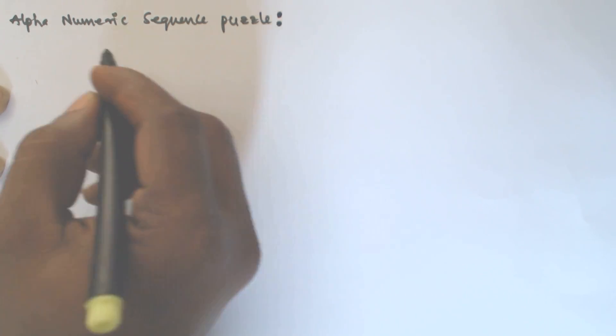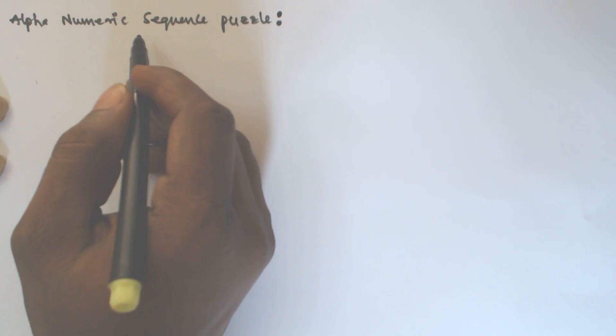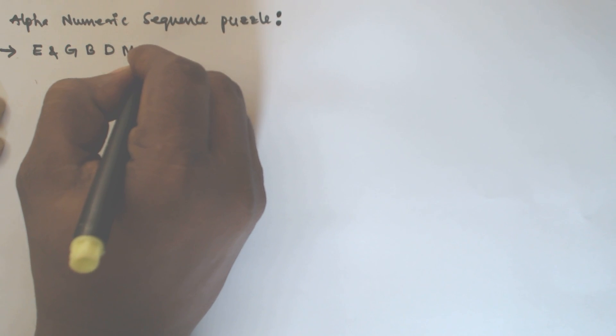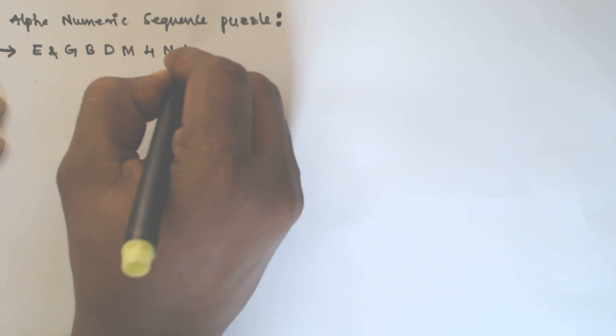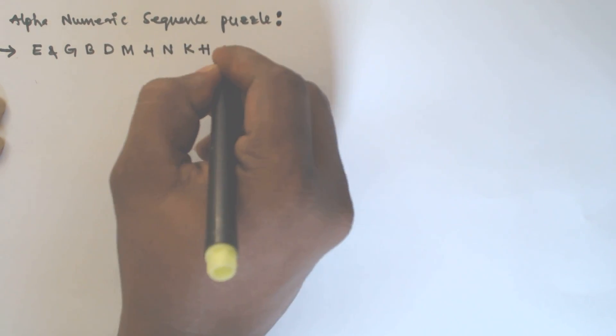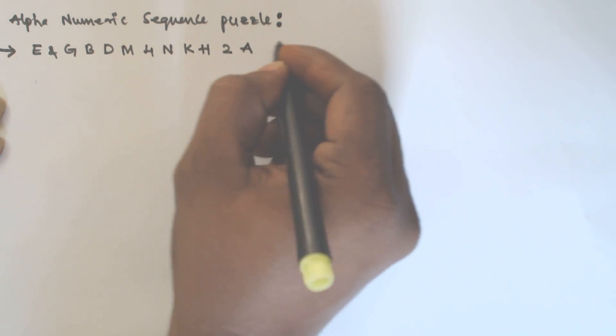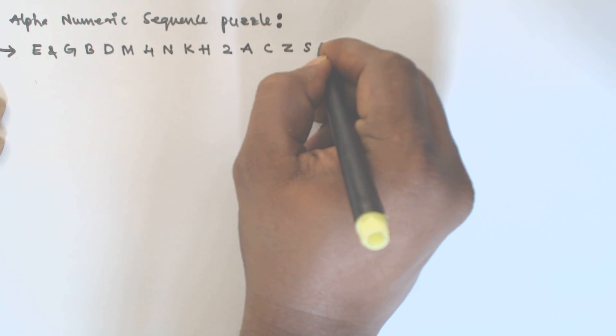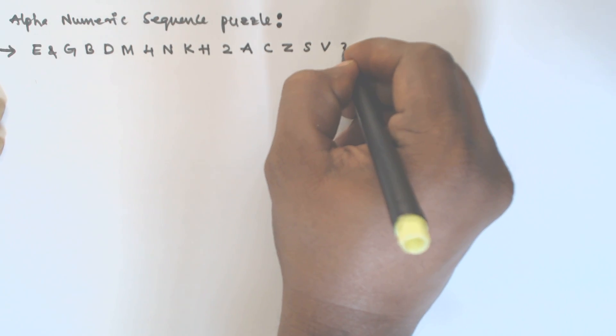Hello friends, in this video we will see another problem based on the alphanumeric sequence puzzle. The given alphanumeric sequence is: E & G B D M 4 N K H 2 A C Z S V 3.